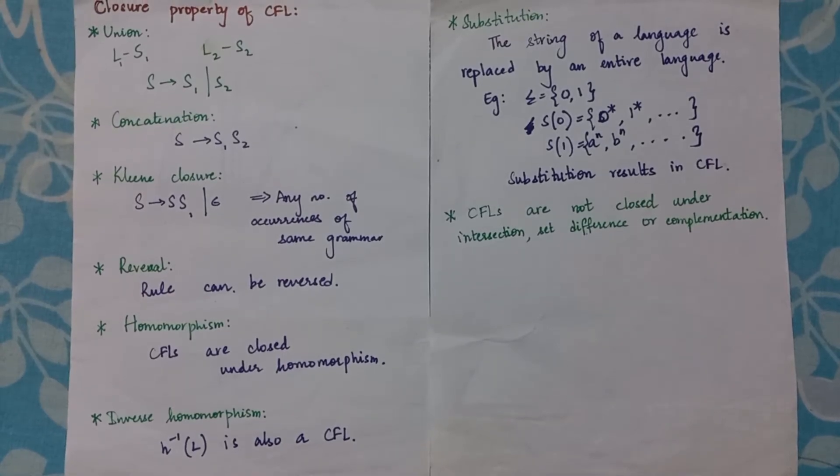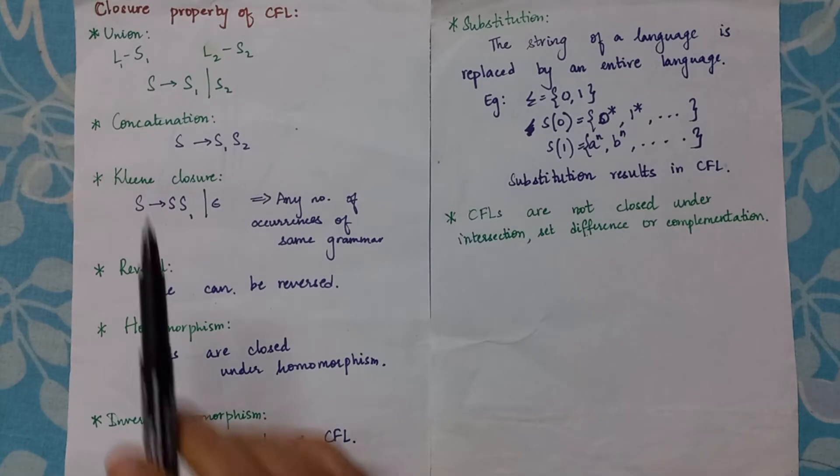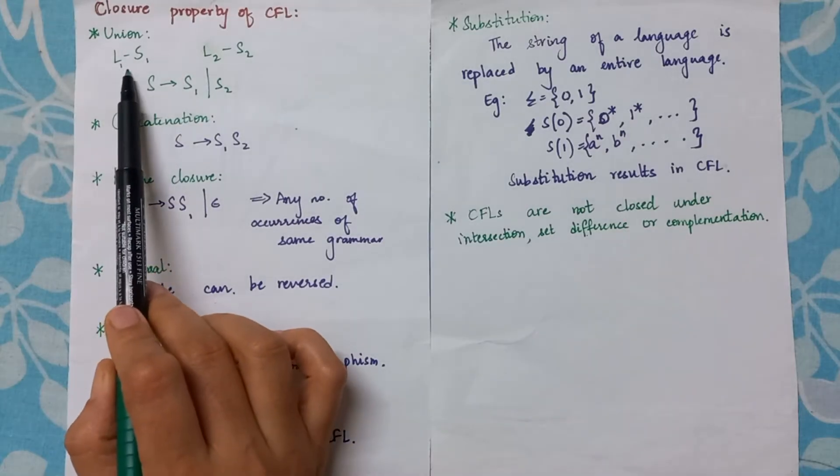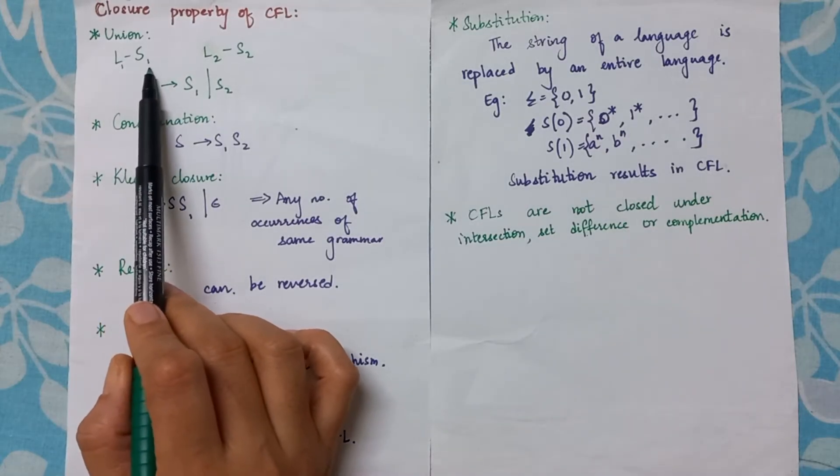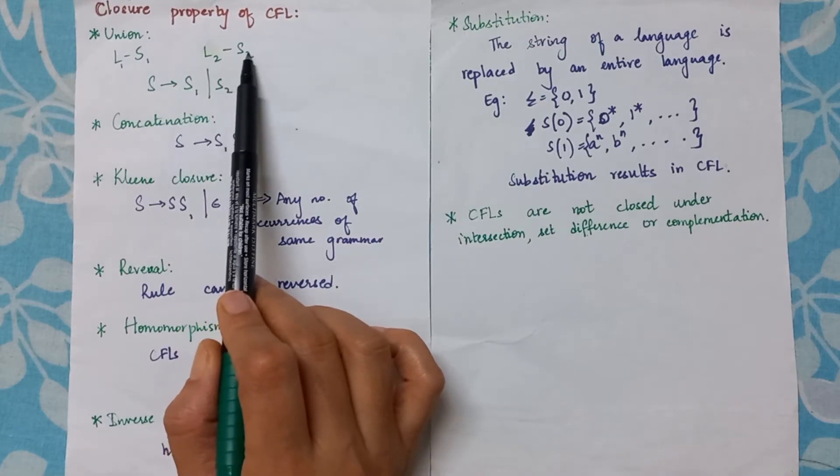Hello everyone, today we will be discussing closure property under CFL. Consider if we have a particular language with production rules given as s1, and another language for which the production rules are given as s2.